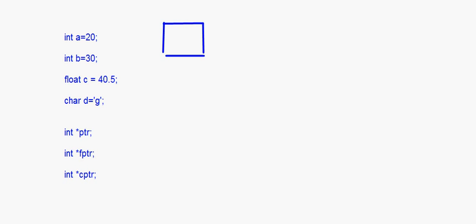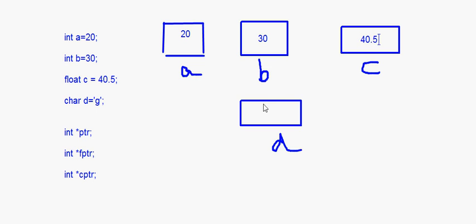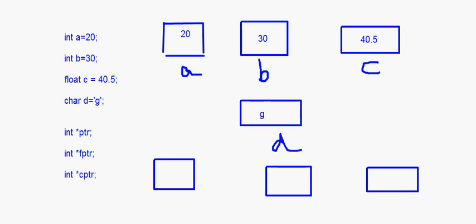In memory, you have variables a, b, c, and d with values 20, 30, 40.5, and 'g' respectively — these are all normal variables. The pointer variables ptr, fptr, and cptr are also allocated as separate memory locations. So you have three pointer variables here in your memory.